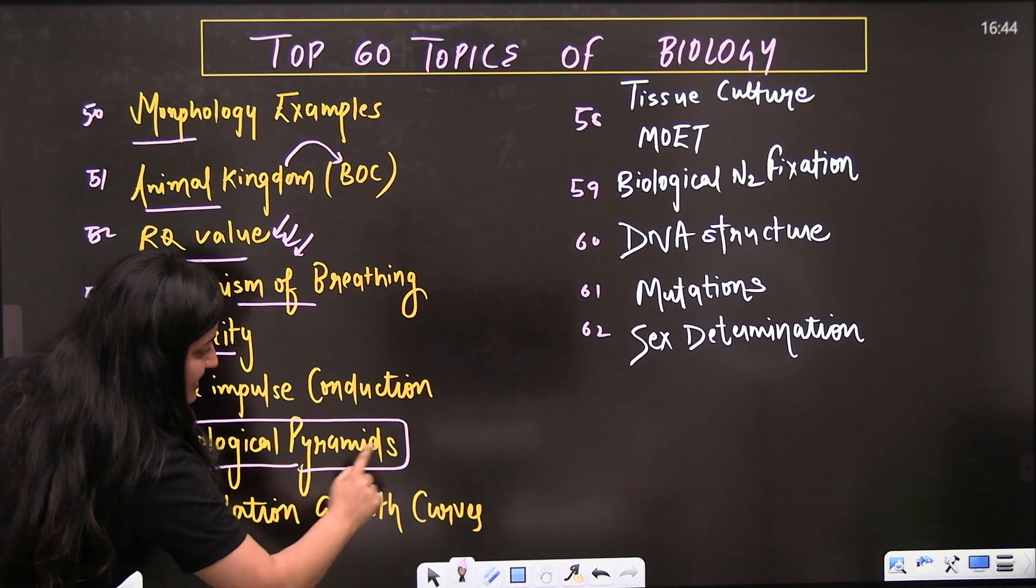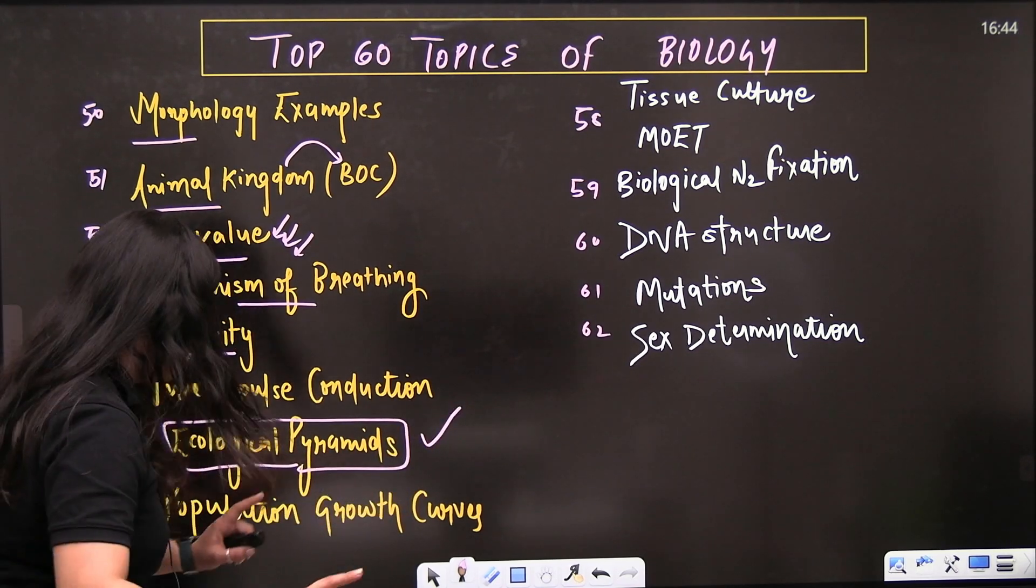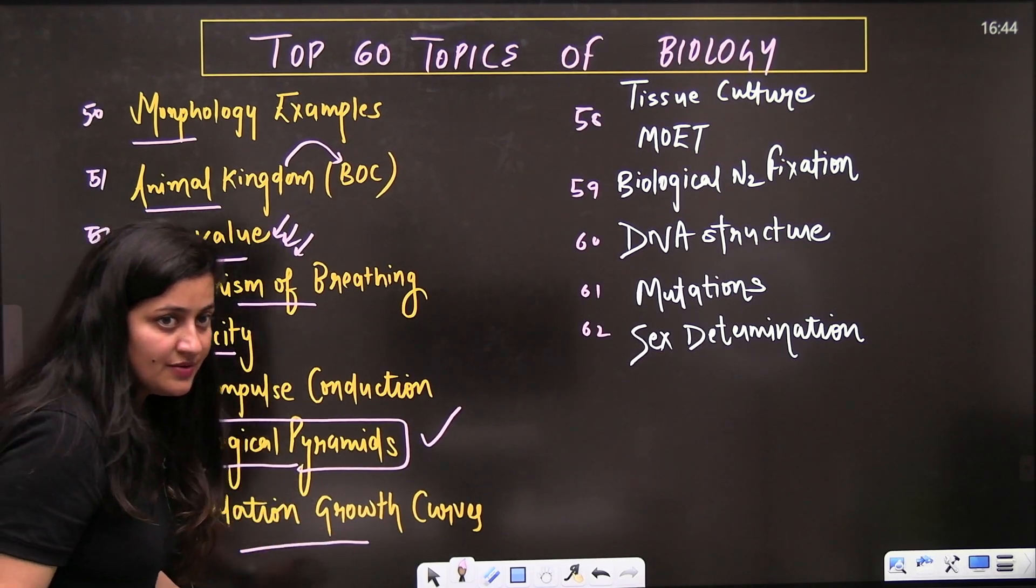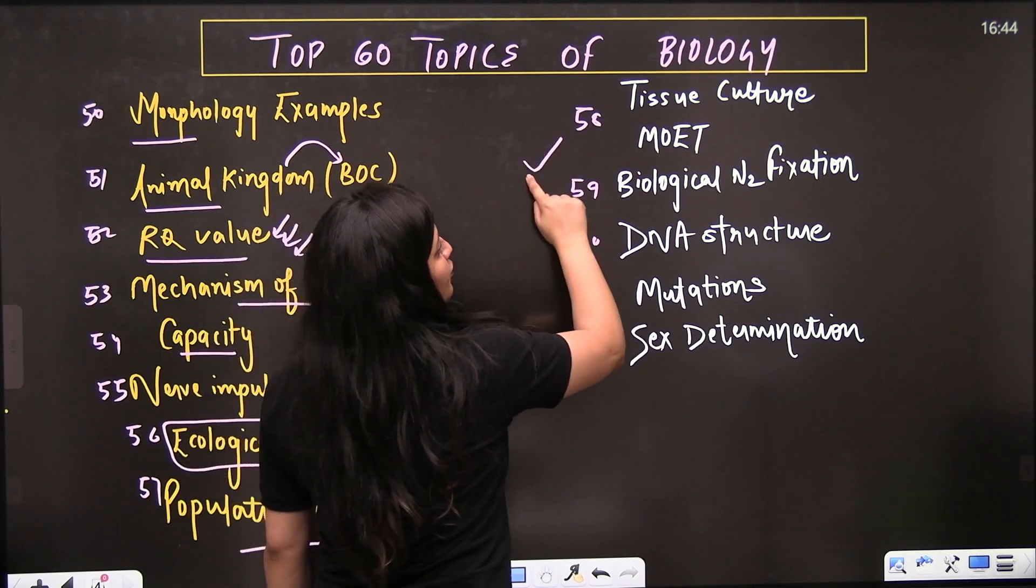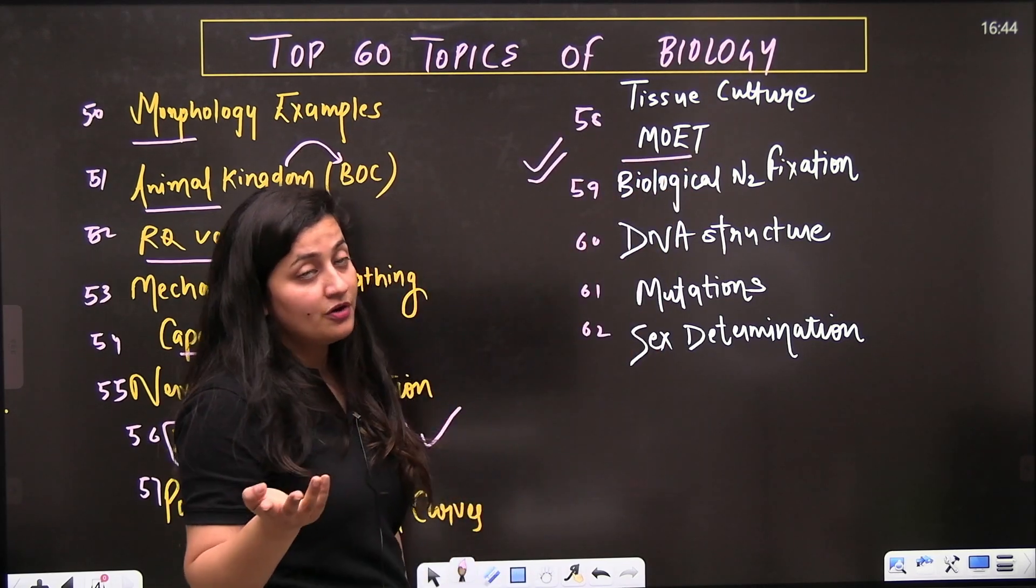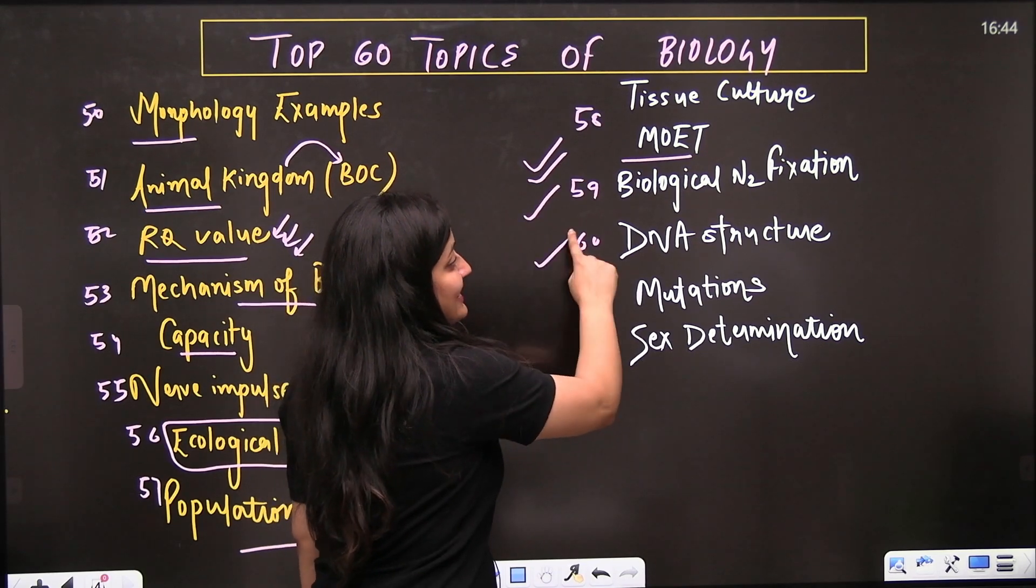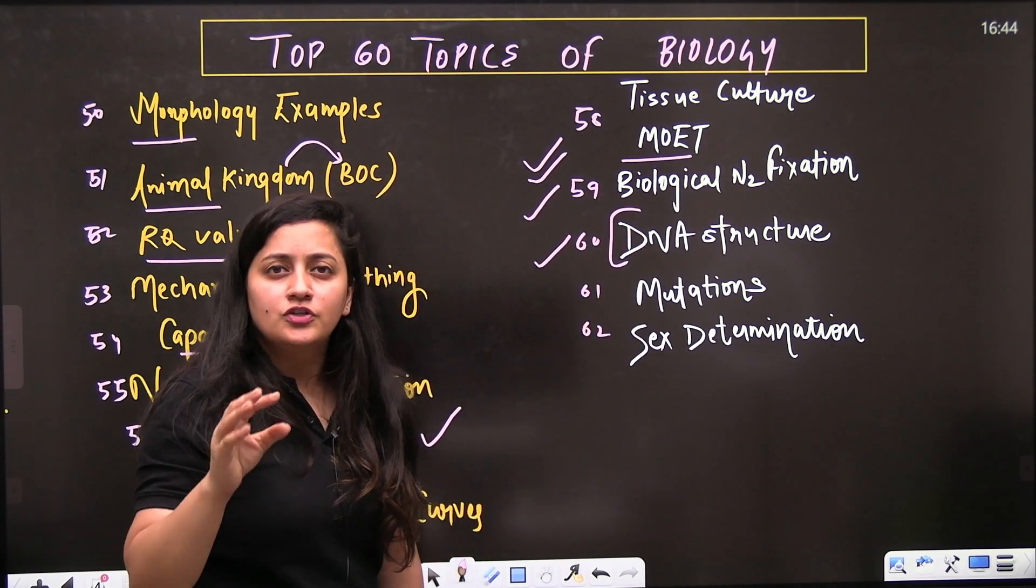Ecological pyramids - yes they are important. Population growth curve from organism and population is important. Tissue culture and MOET - multiple ovulation embryo transfer technology - important.